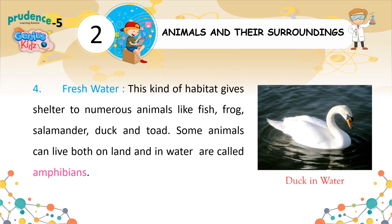Freshwater. This kind of habitat gives shelter to numerous animals like fish, frog, salamander, duck, and toad. Some animals can live both on land and in water — these are called amphibians.